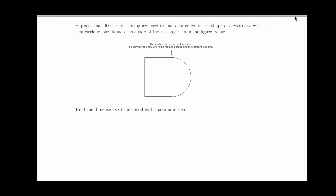Hello and welcome to another screencast about optimization problems. This optimization problem involves a corral in the shape of a rectangle with a semicircle whose diameter fits precisely over one side of the rectangle. We have 900 feet of fencing to make this corral and we want to find the dimensions of the corral with maximum area.